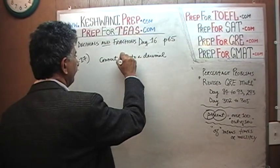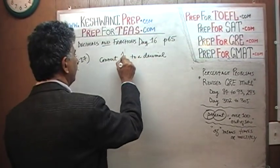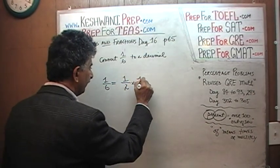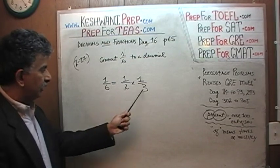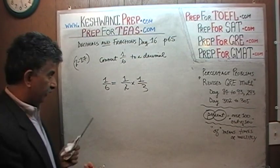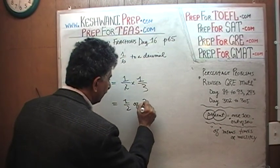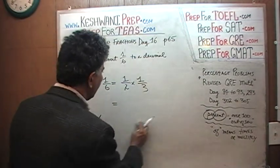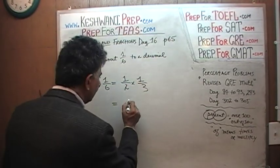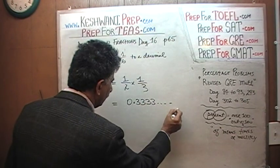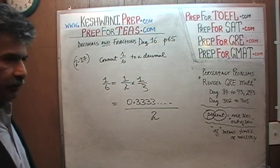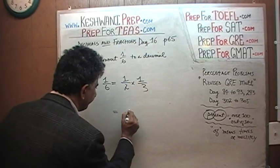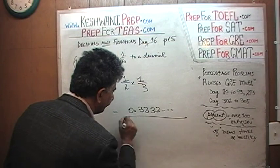What's the next one? Convert 1 sixth into a decimal. A sixth, as we learned on day number 9, is simply a half of a third — 1 times 1 is 1 and 2 times 3 is 6. How much is a third? A third is 33%. So 1 sixth is just half of 33.33% going on and on. Half of one third is simply 0.3333... over 2. Now all we have to do is divide it.